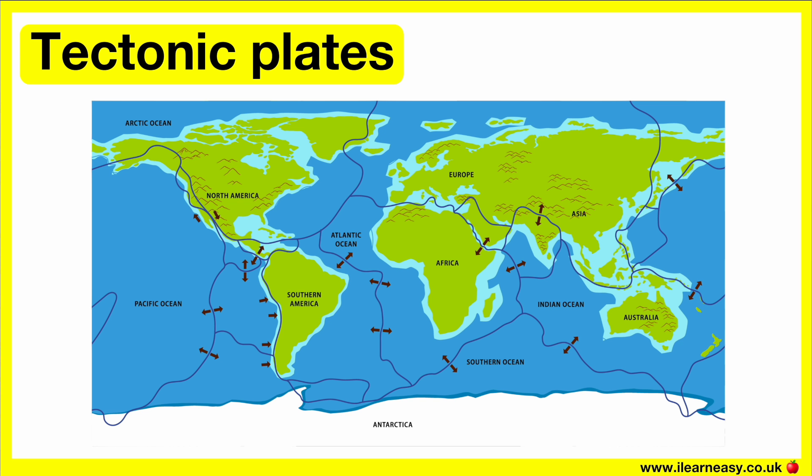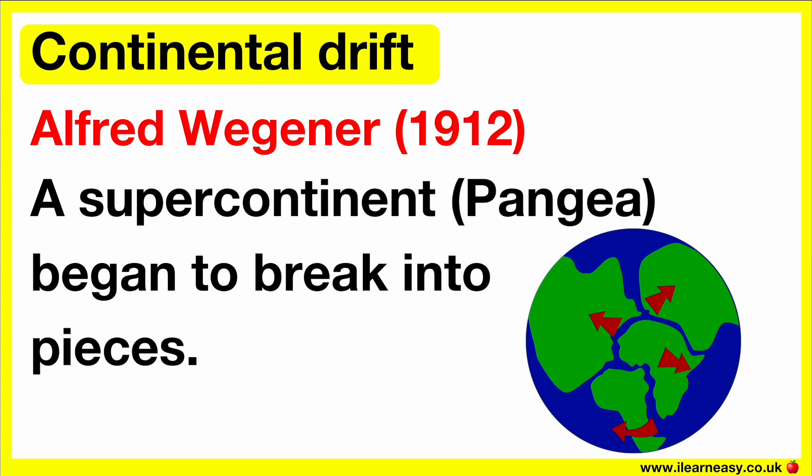In 1912, a German scientist came up with the idea that the continents were all once joined together. He called this large body of land Pangea. He suggested that more than 200 million years ago, Pangea split apart to form continents. The continents then drifted apart to their current locations. Scientists since then have found evidence that this idea was correct. They now believe that the continents sit on a number of large plates. The plates float on a layer of melted rock. As the plates slide over the melted rock, the continents also move. This idea is called plate tectonics.